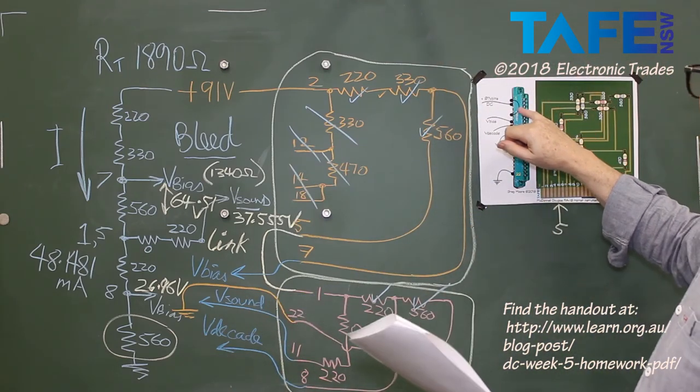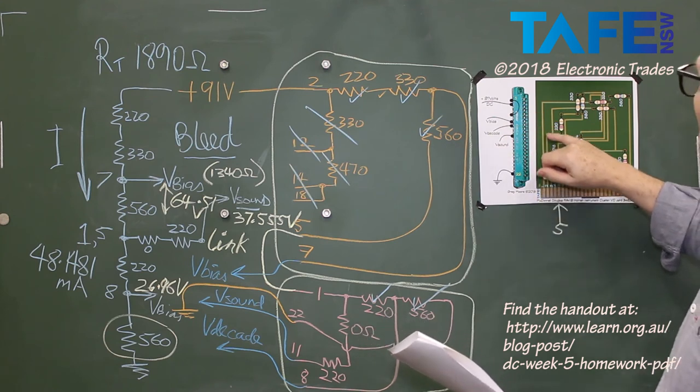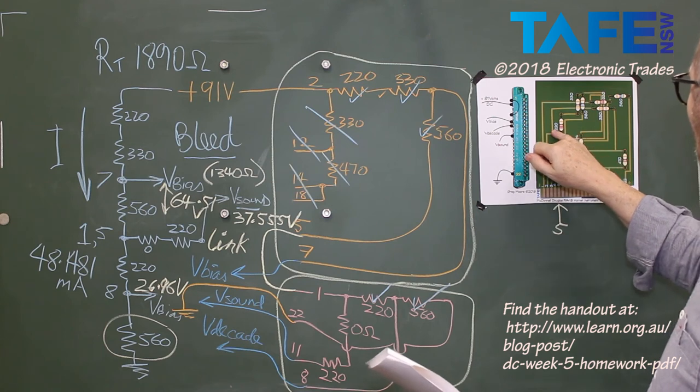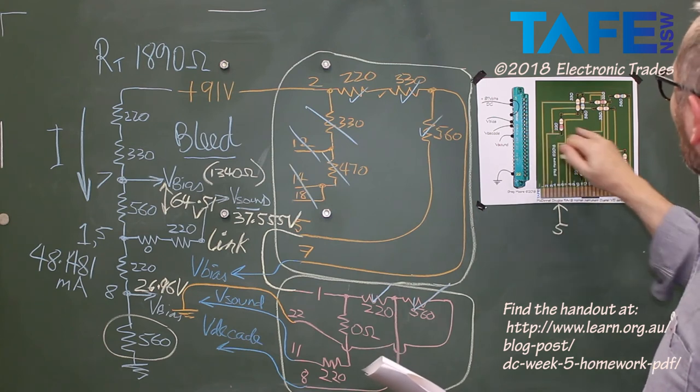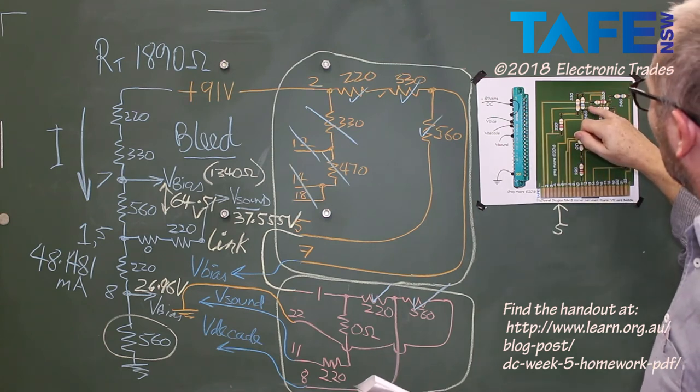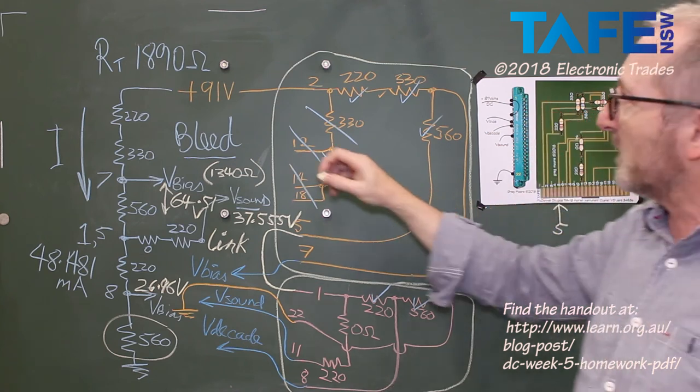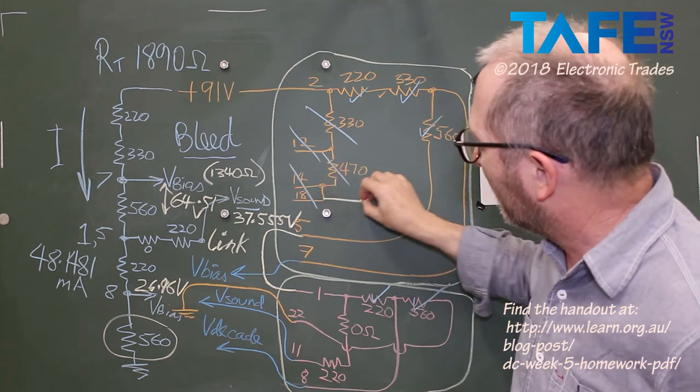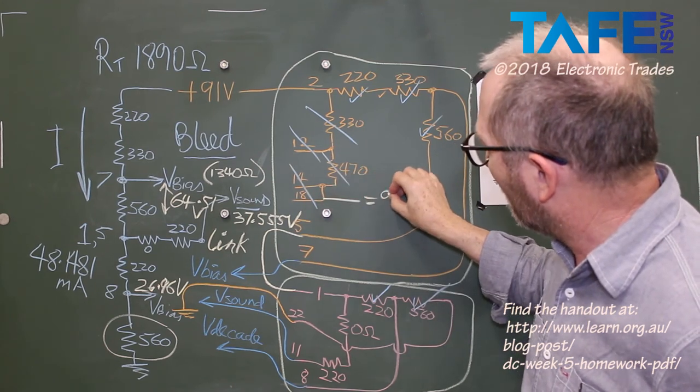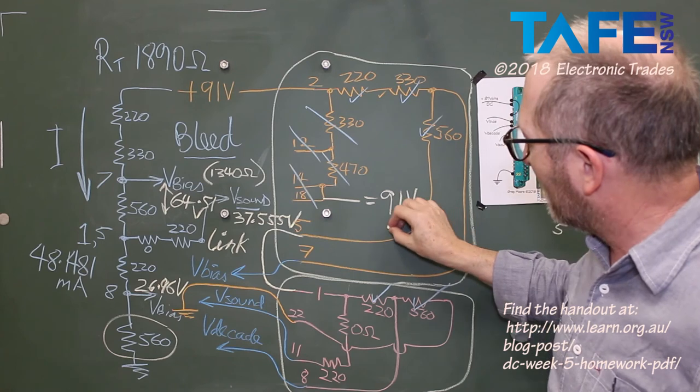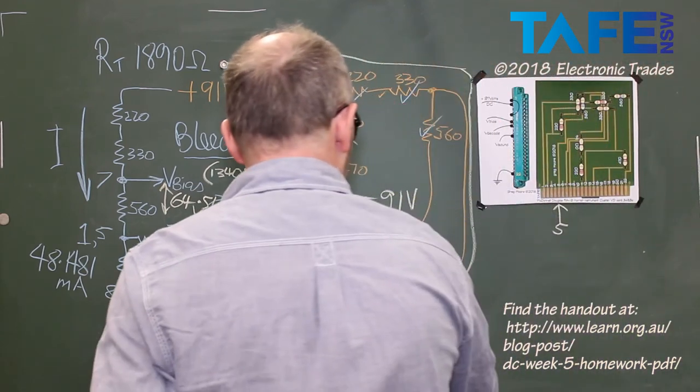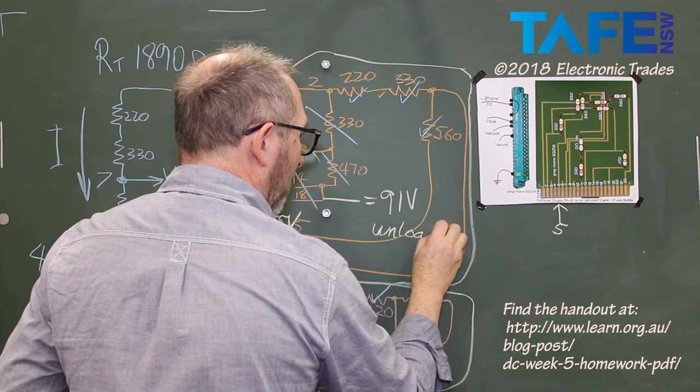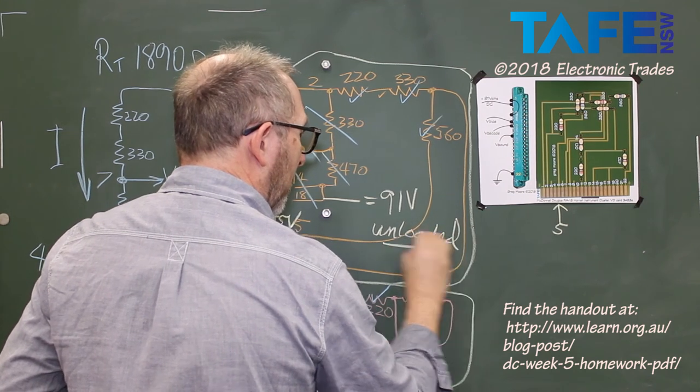Let's just check that I've done that correctly though. Pin 2 comes in and we want to find our way through to pin 18. 18, 470, 330, back up to pin 2. Yes, that's correct. So the voltage at pin 18 equals 91 volts. And I'm going to write here next to it, unloaded.